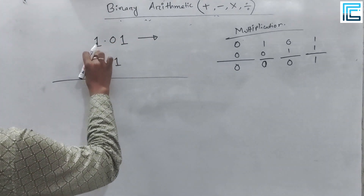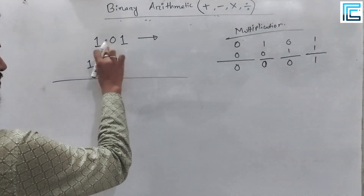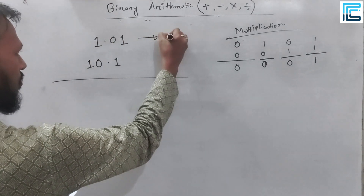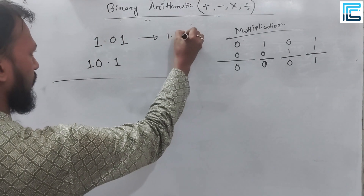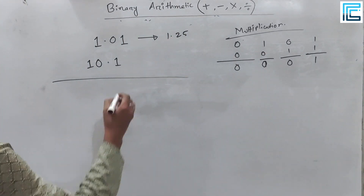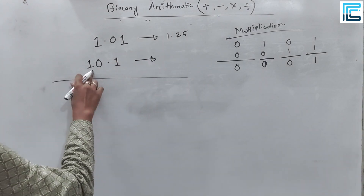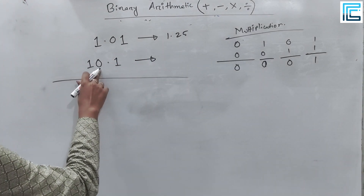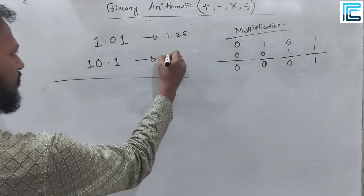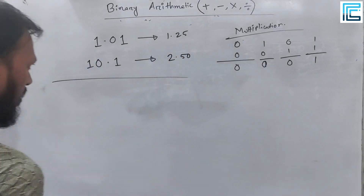So let us see: the binary positions are 1, 0.5, and 0.25. So the value is 1.25. Now I am going to convert the decimal. What is the value? It is 10, which is 2.5.